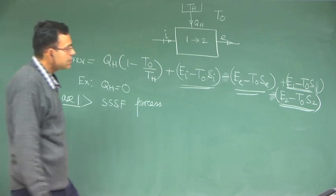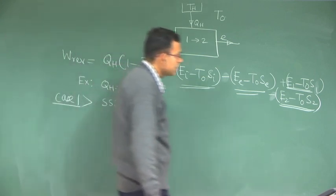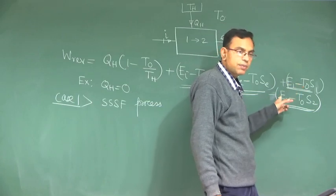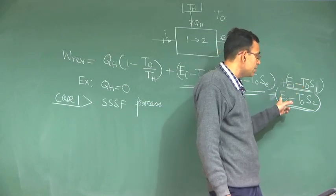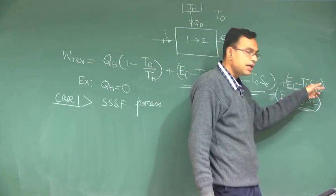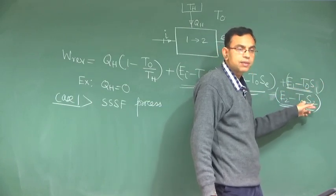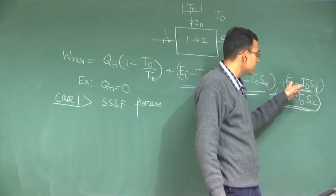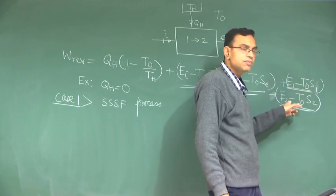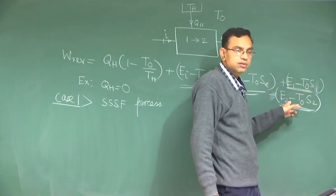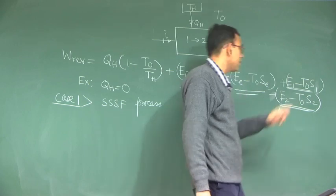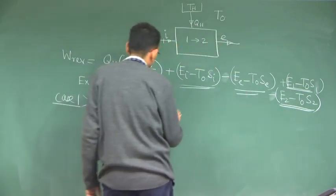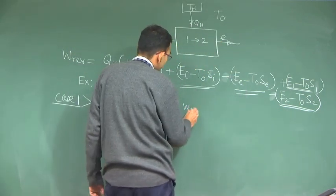If it is a steady state, the final energy of the control volume is same as the initial energy, and the final entropy of the control volume is same as the initial entropy. So these last two terms do not appear, and you will have W_rev.